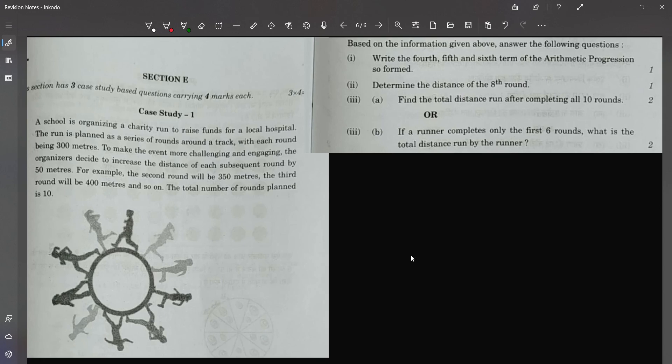The total number of rounds planned is 10. Based on the information given above, answer the following questions. Don't look at the diagram, it's just not very relevant to the question. Write the 4th, 5th and 6th terms of the arithmetic progression so far.